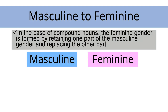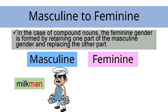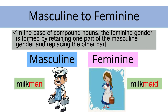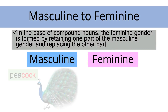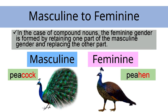In the case of compound nouns, the feminine gender is formed by retaining one part of the masculine gender and replacing the other part. For example, milkman becomes milkmaid, and peacock becomes peahen. The second part of the masculine gender noun is replaced to form the feminine gender.